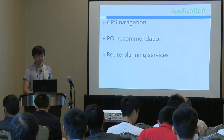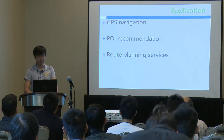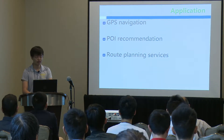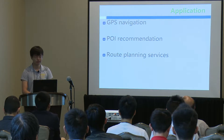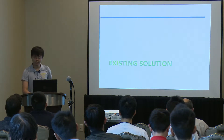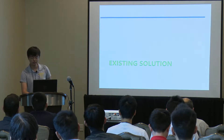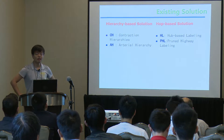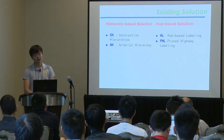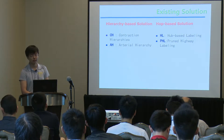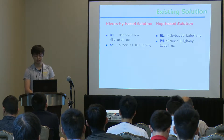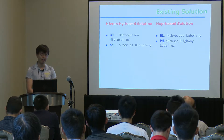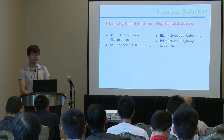There are many applications such as GPS, navigation, POI recommendation, and route planning. There are two main kinds of solutions for the shortest distance query: the hierarchy-based solution and the hop-based solution.